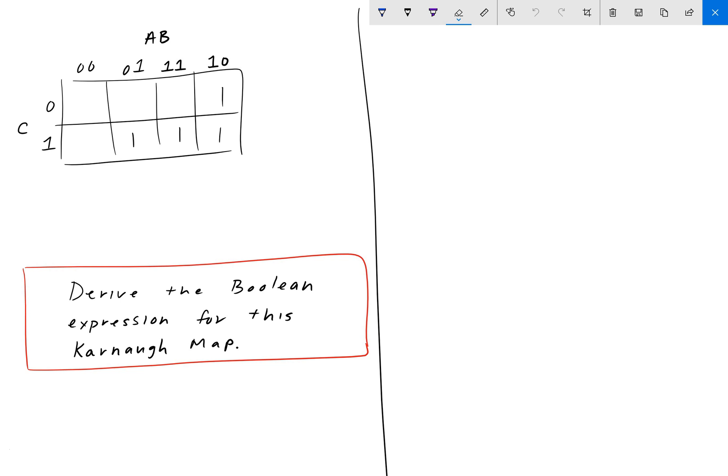For this next problem, we have our first Karnaugh map problem, and here we have three variables: a, b, c. The problem is asking us to derive the Boolean expression for this K-map.